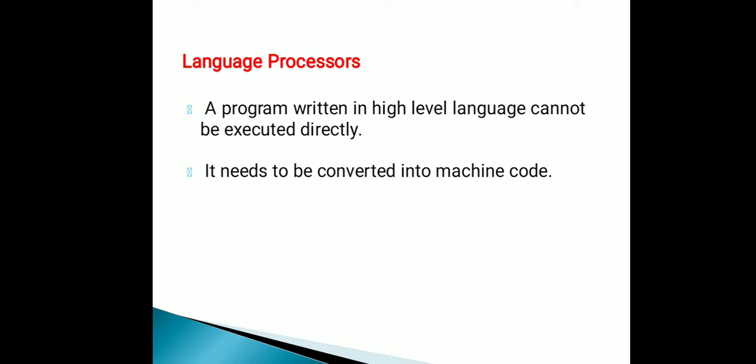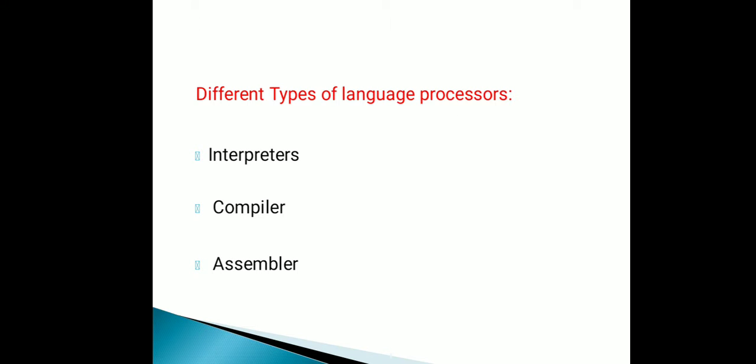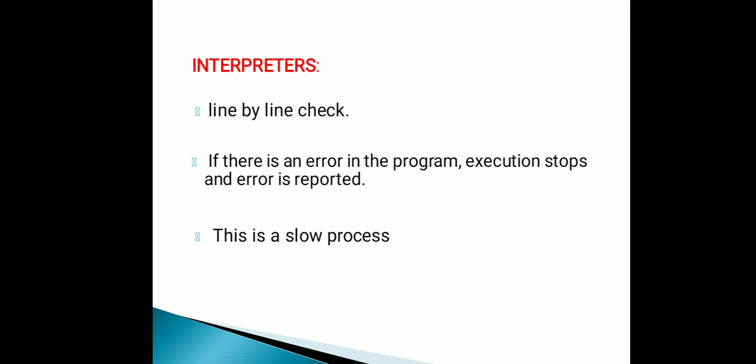The different types of language processors are interpreters, compilers, and assemblers. Now let's discuss what an interpreter is. When a developer writes a program, we need a language processor to execute it.